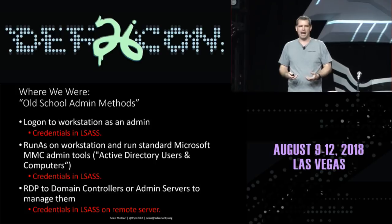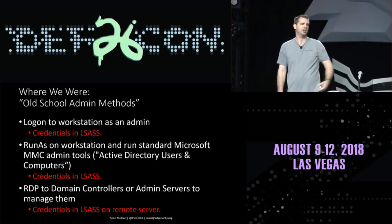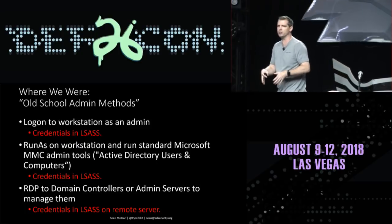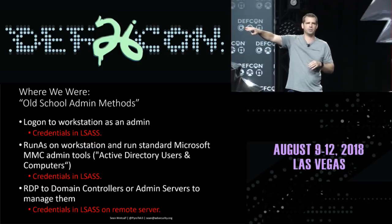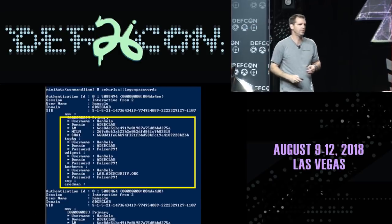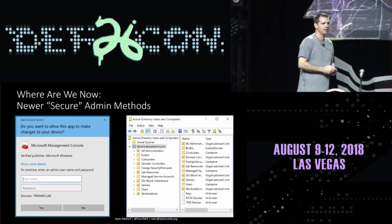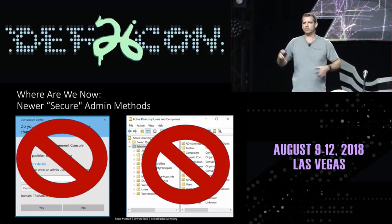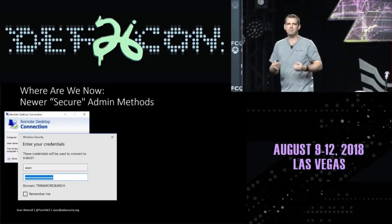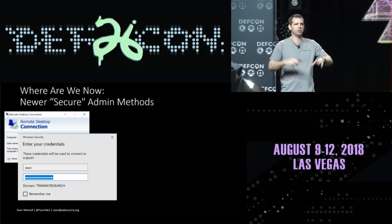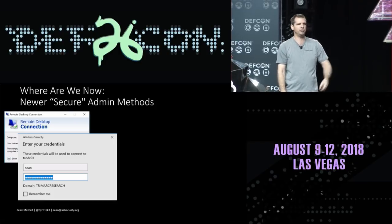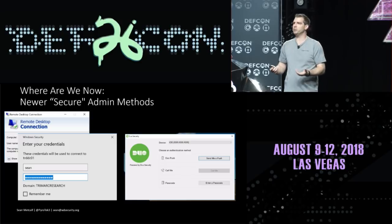The old methods were bad — log on to a workstation as an admin, credentials in LSAS; run-as, credentials in LSAS; RDP also leaves credentials behind. People stopped doing admin tasks on their local workstation, then RDP'd into an admin server — but didn't track how that admin server is protected. Mimikatz, obviously. Newer admin security methods say no more run-as, no more MMC on the local system — instead use RDP and connect to another system, maybe with MFA like Duo.